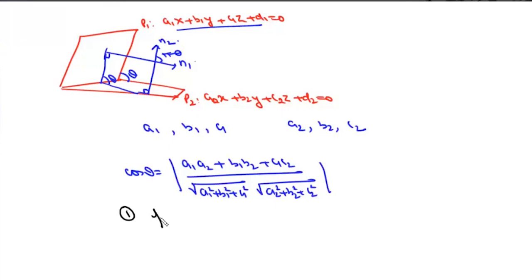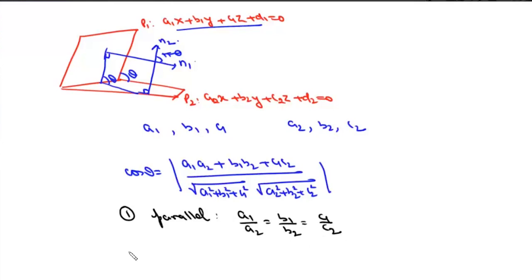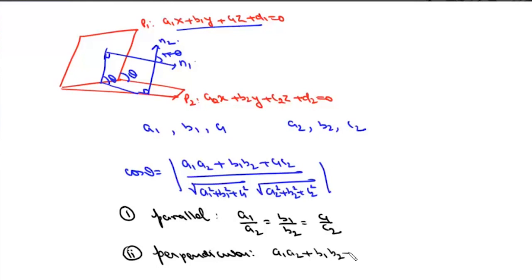The two planes are parallel if their normals are parallel, meaning a1/a2 = b1/b2 = c1/c2. The two planes are perpendicular if a1*a2 + b1*b2 + c1*c2 = 0.